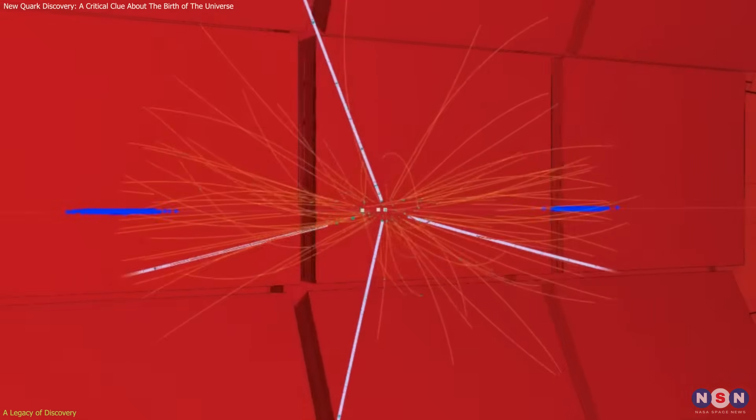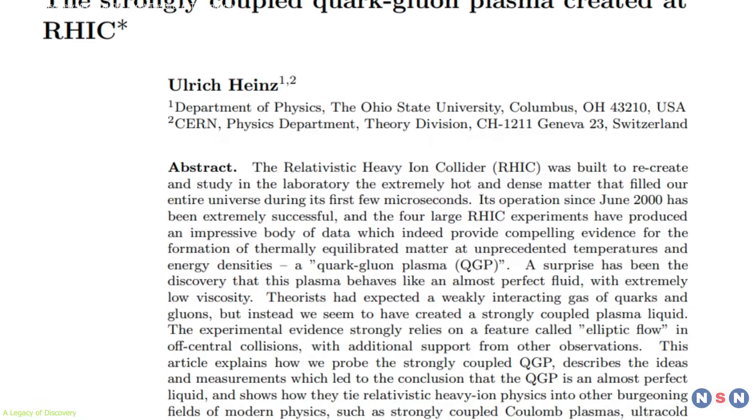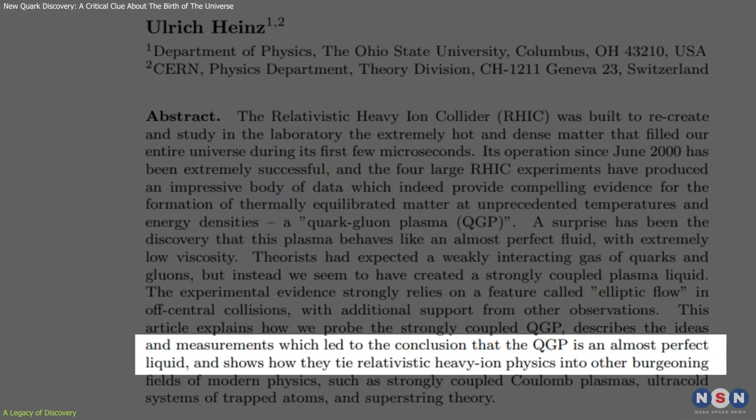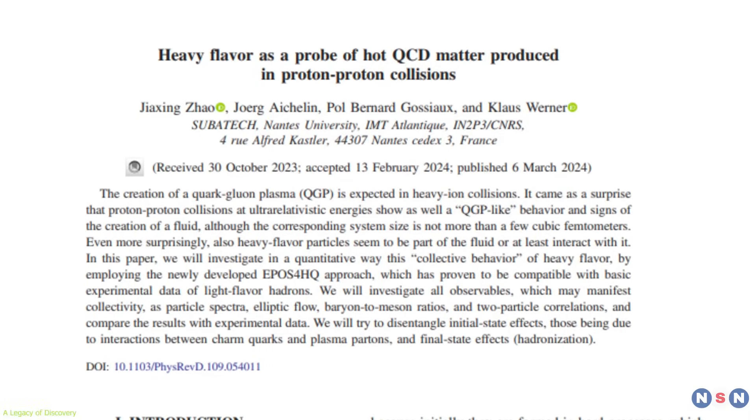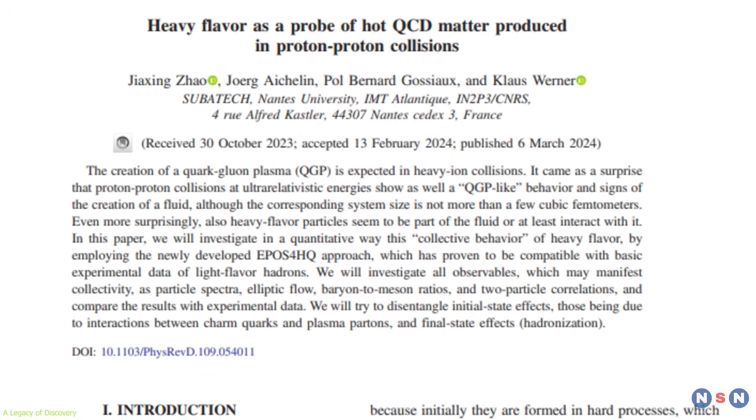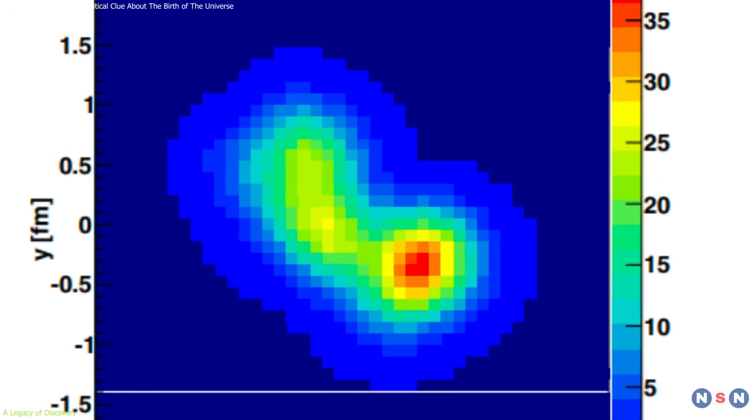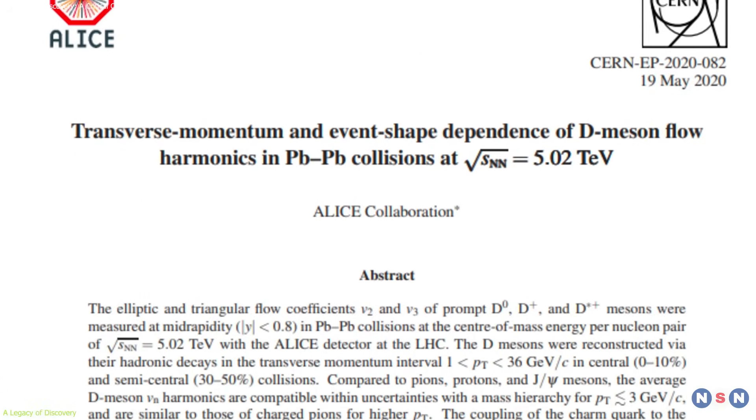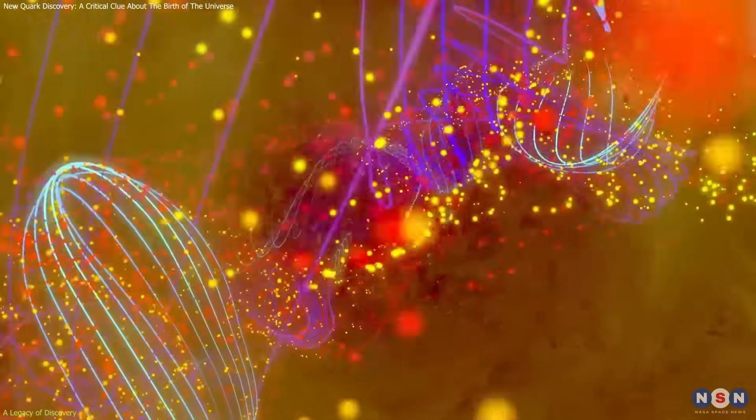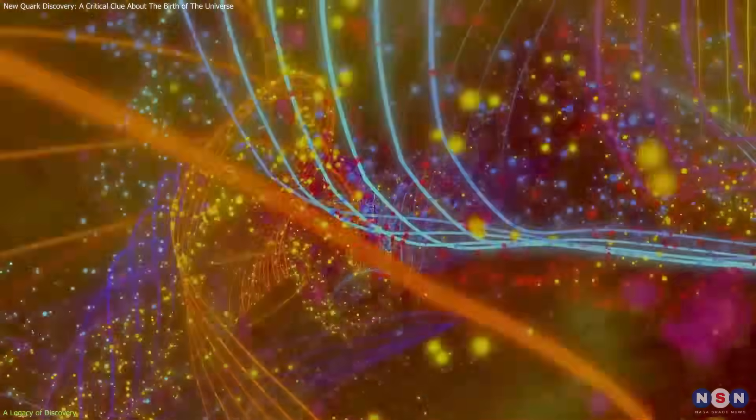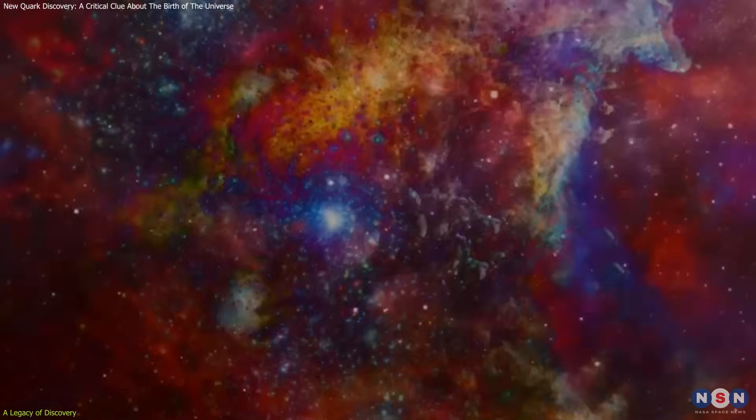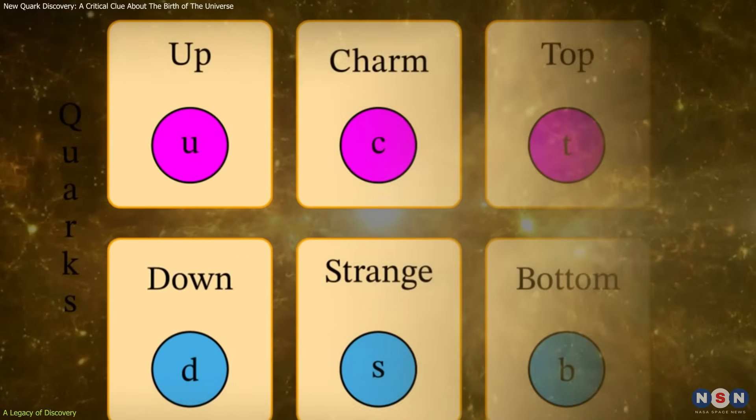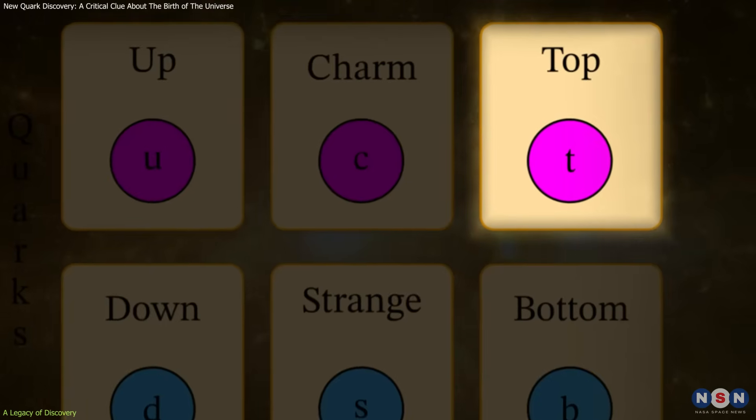There've been other major strides, too. In 2005, experiments at RHIC revealed that quark-gluon plasma behaves like an almost perfect liquid, surprising many physicists. Later, CERN's ALICE experiment showed that even smaller collisions, like proton-proton ones, can produce QGP-like conditions. And in 2020, charm quarks were detected in heavy ion collisions, adding to the growing list of quark flavors observed in extreme environments. Each of these discoveries acts like a puzzle piece, giving us a richer view of how matter behaves under extreme conditions. By covering the spectrum of quark masses and lifespans, from the lightweight up-quark to the massive top, we now have a clearer picture of what that primordial soup was really like.